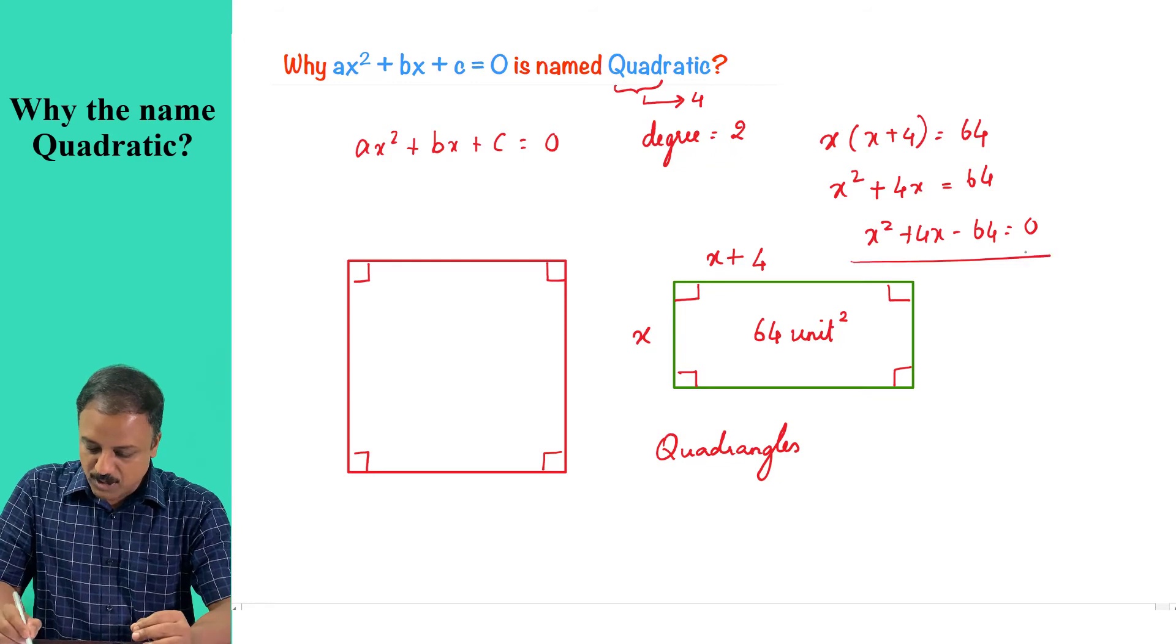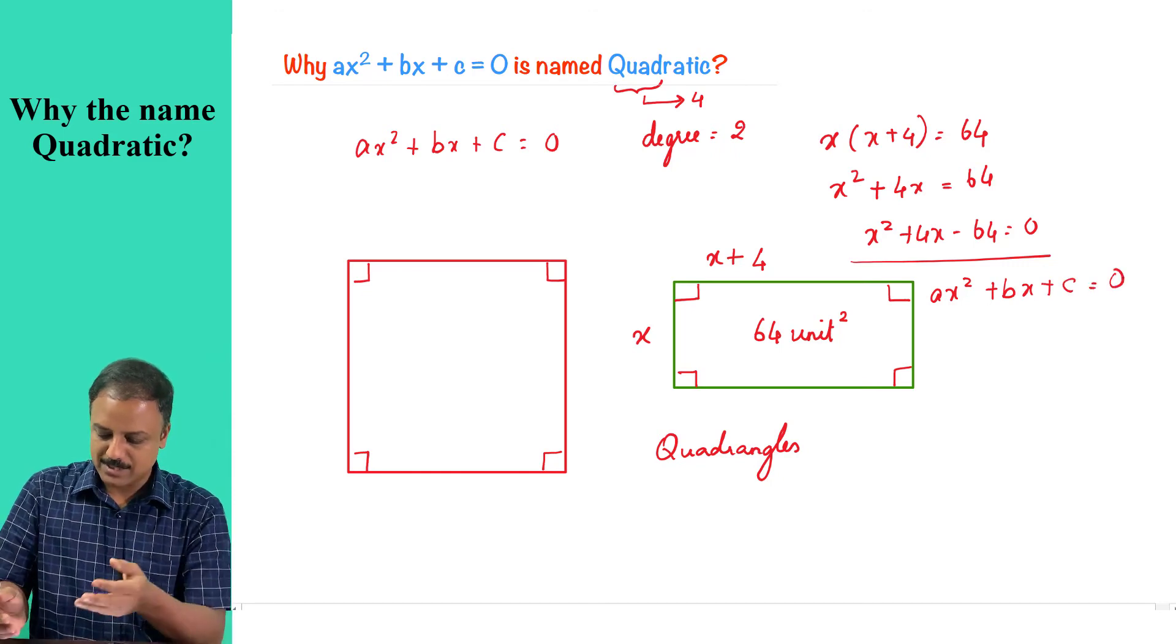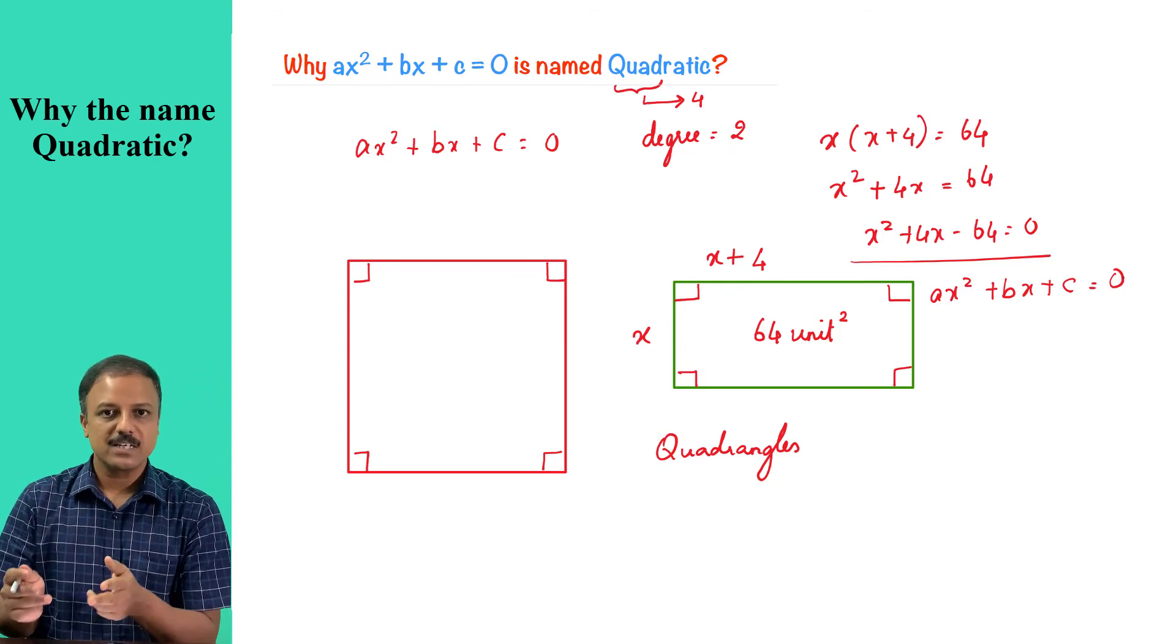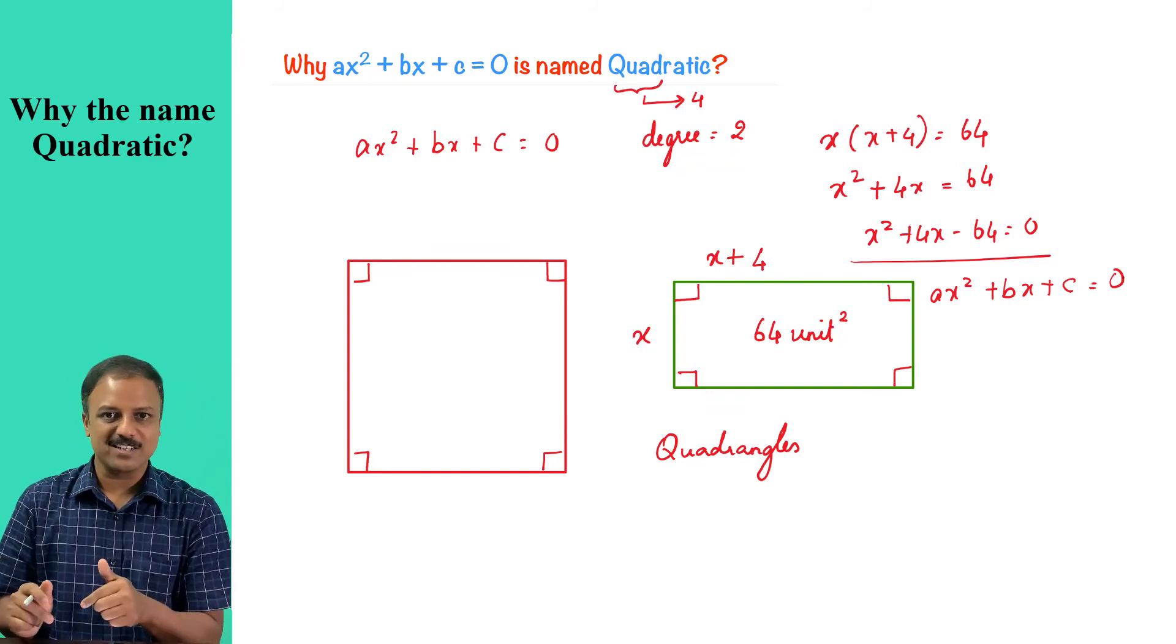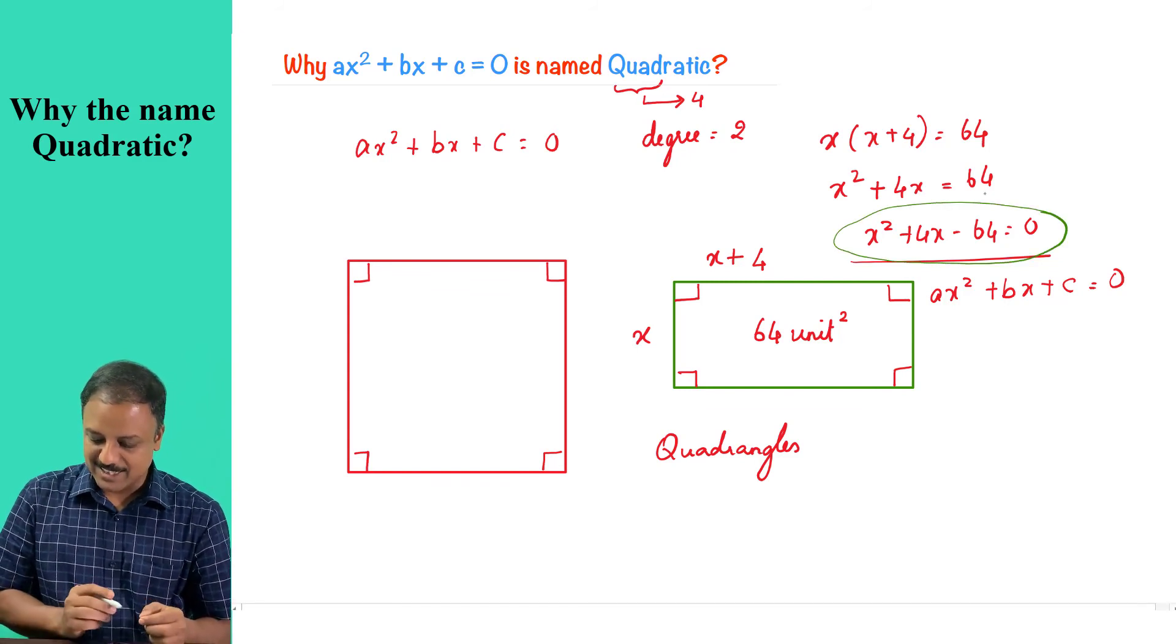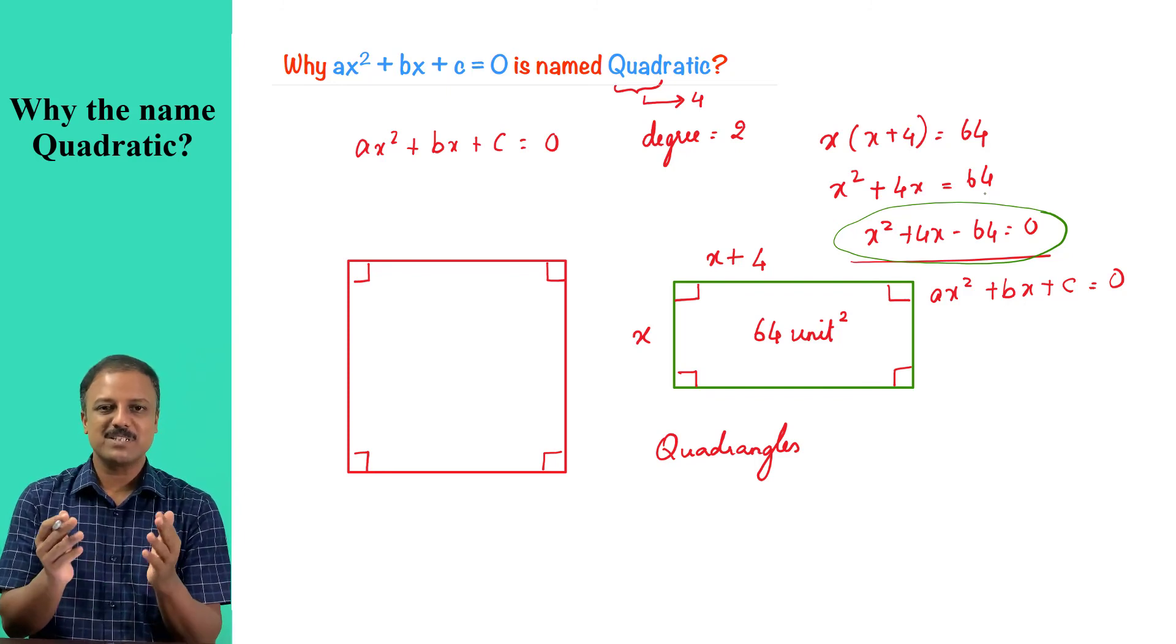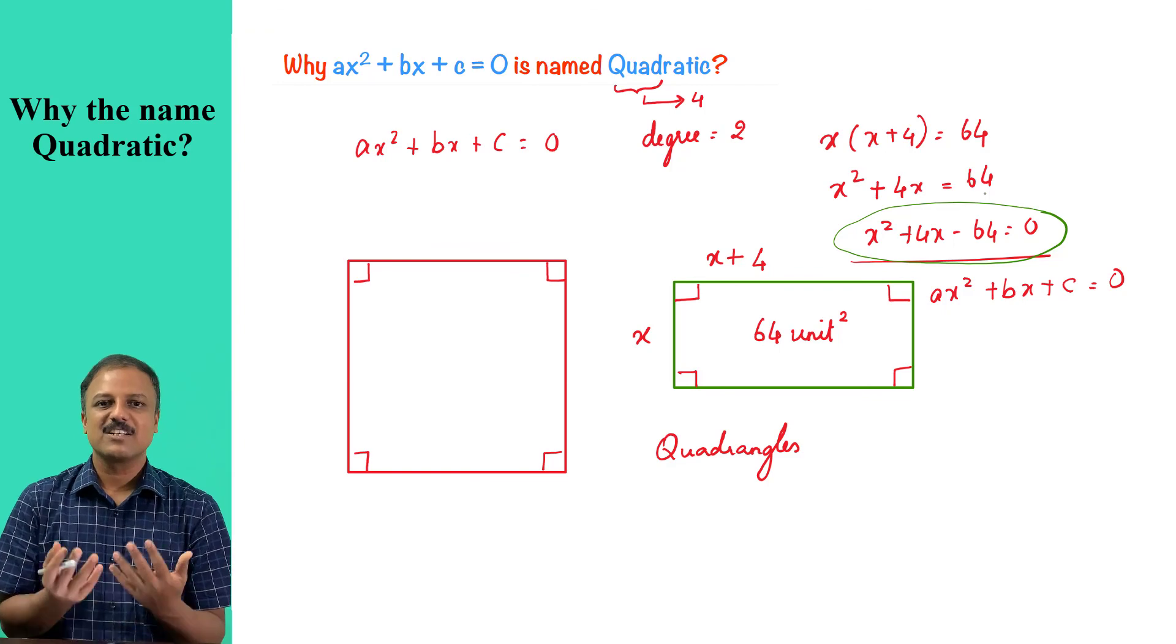Now, this has a form ax squared plus bx plus c equals zero, where c is a constant which is minus 64. What does this expression x squared plus four x minus 64 equals zero represent? It represents area of a quadrangle. Because I told you rectangle is a quadrangle or square is a quadrangle. So this expression clearly represents area of a quadrangle and therefore it is given the name quadratic. Since this equation ax squared plus bx plus c equals zero represents area of any quadrangle, the name of this equation is given as quadratic.